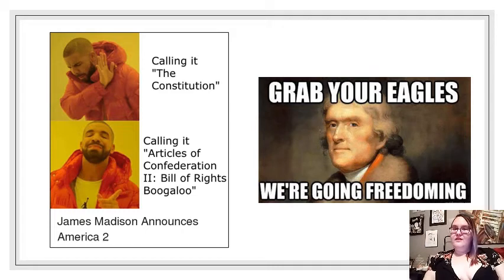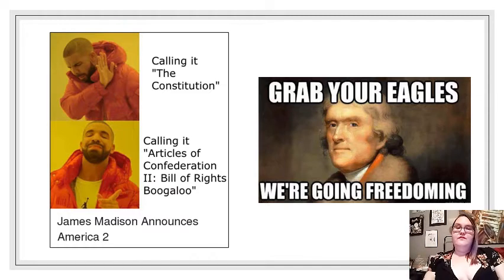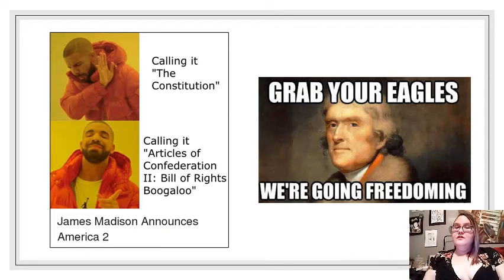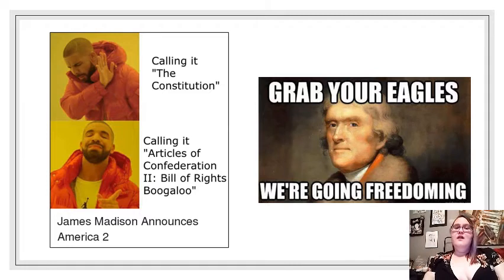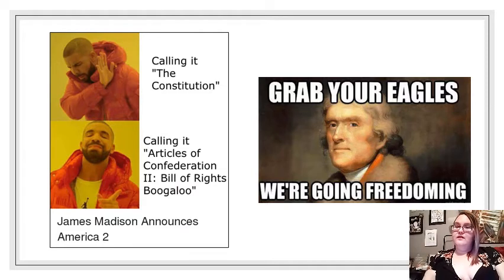The Constitutional Convention gathered in May of 1787 to address the issues with the Articles of Confederation and the problems that resulted from having such a weak central government. What resulted was the creation of an entirely new document that made a new, stronger central government broken down into the judicial, executive, and legislative branches. Once the proposed Constitution went to the states for ratification, a furious debate began between those in favor of its passage — the Federalists — and those who opposed the Constitution and a stronger central government, known as the Anti-Federalists.